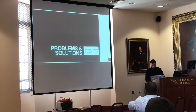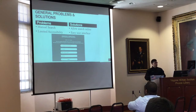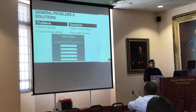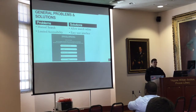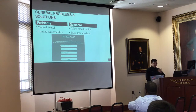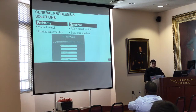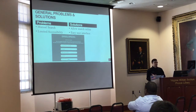Problems and solutions. Some general problems I wanted to solve were manual search and limited accessibility. If you wanted to find your dike line at any point in your VMI life, you'd have to either come back to VMI and search manually, or look online using the yearbooks — basically manual but online — and those yearbooks only go up to a certain date, around 2008 or possibly earlier. Solutions: allow search online and create an easy user interface that anybody can use, making it globally accessible.